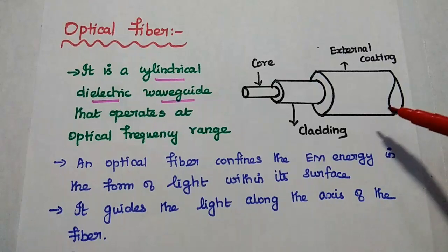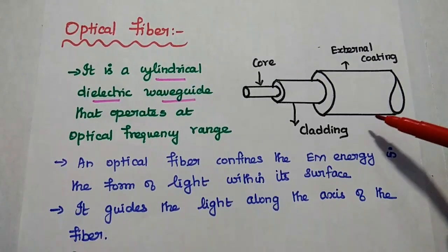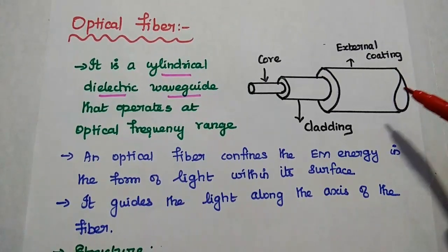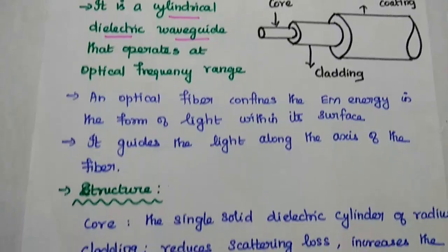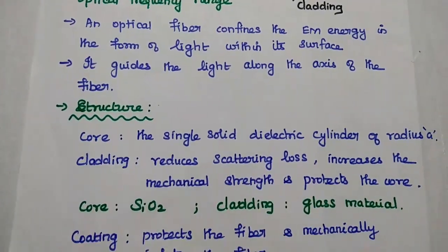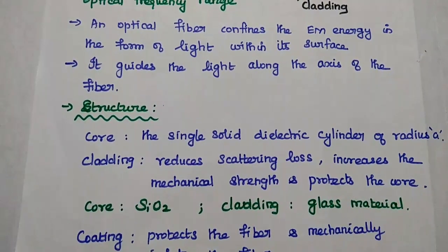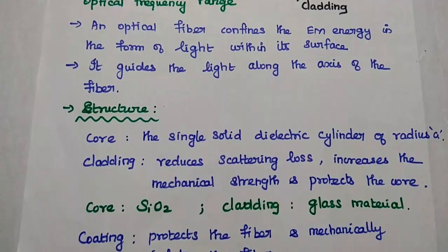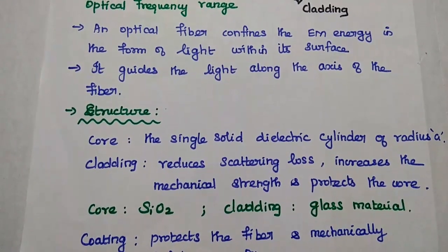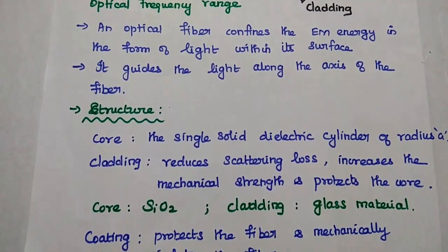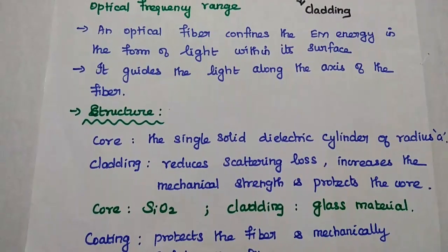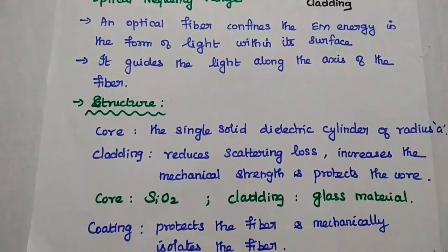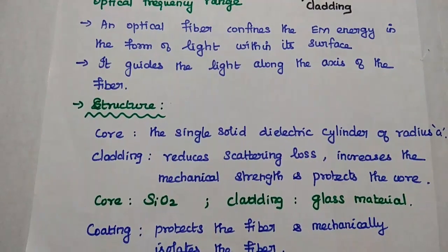The next one is external coating. It is mainly used to strengthen the fiber cable. That's what given here in this structure. Core is the single solid dielectric cylinder of radius A. Cladding reduces the scattering loss, increases the mechanical strength, and protects the core. The final stage is mainly used to protect the fiber.